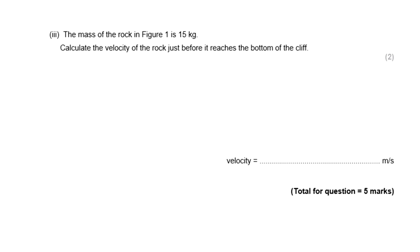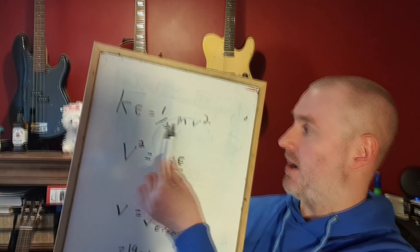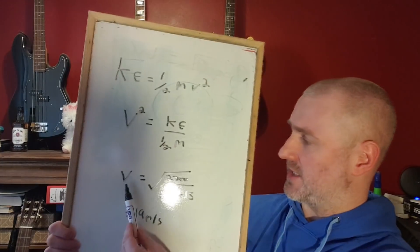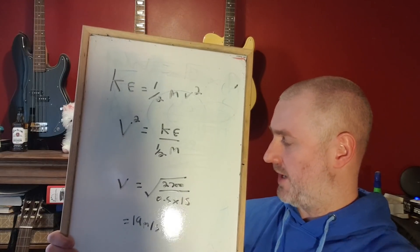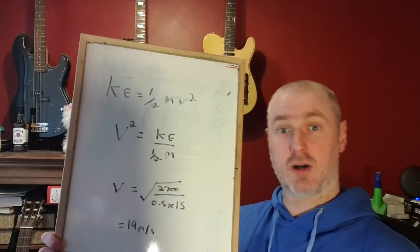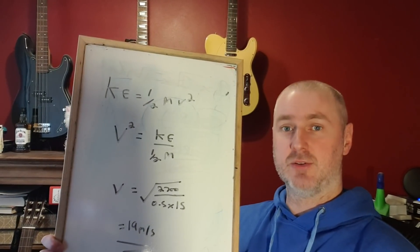Again, you might need some information from part one, but it's asking you how fast will the rock be traveling just before it hits the bottom of that cliff. Pause it now. Right, let's see how we did. Kinetic energy is calculated by a half mass times velocity squared. We can simplify that to V equals the square root of 2,700 divided by 0.5 times 15. If you get this far you've got one mark, and if you punch it into calculator correctly to get 90 meters per second, you get your second mark.